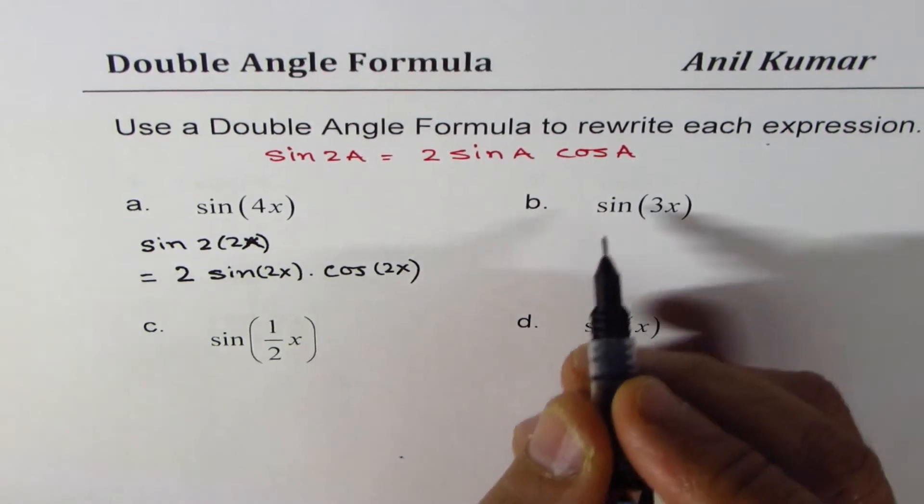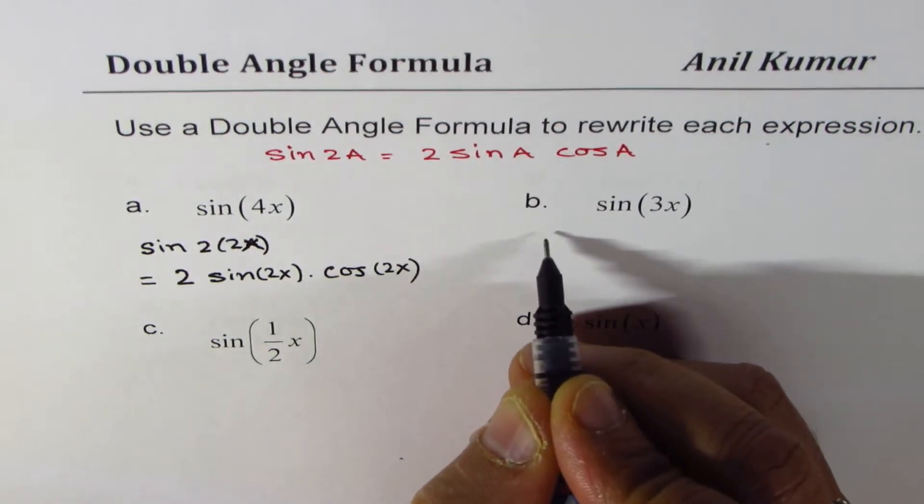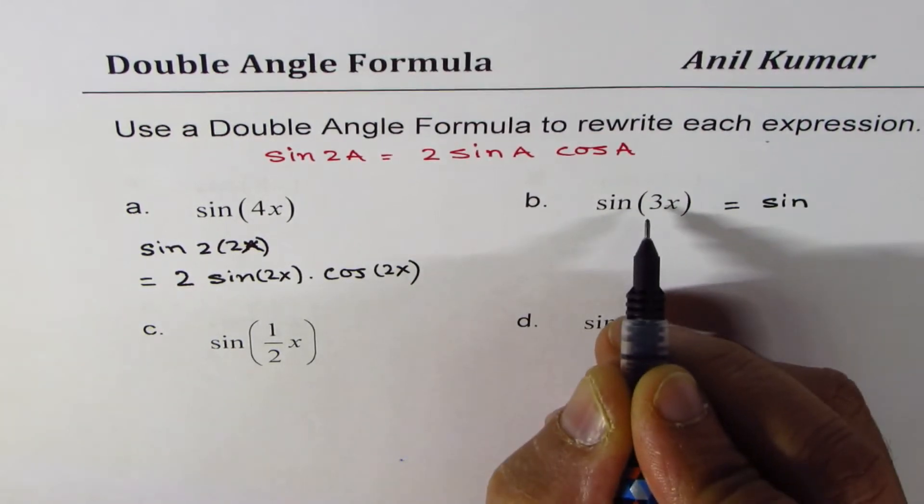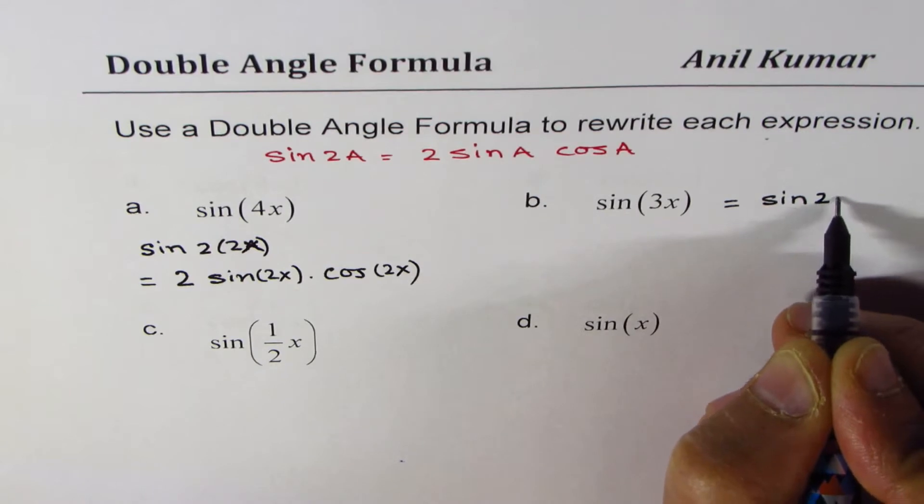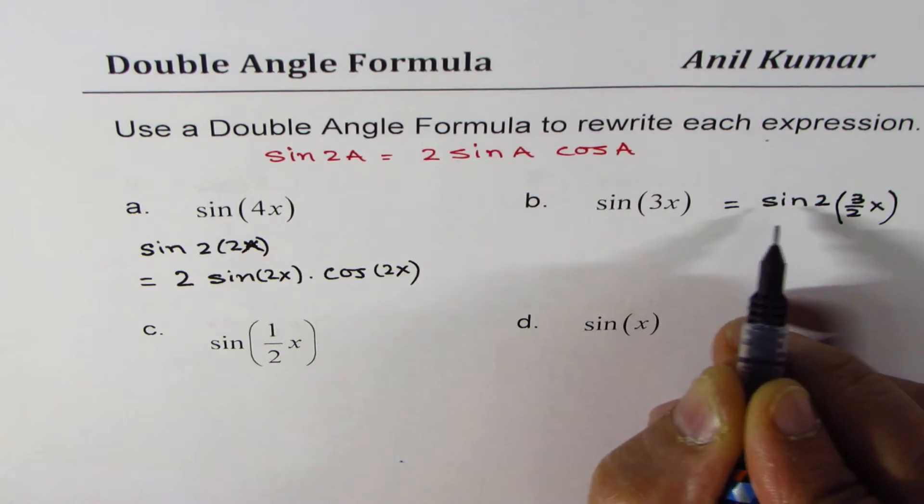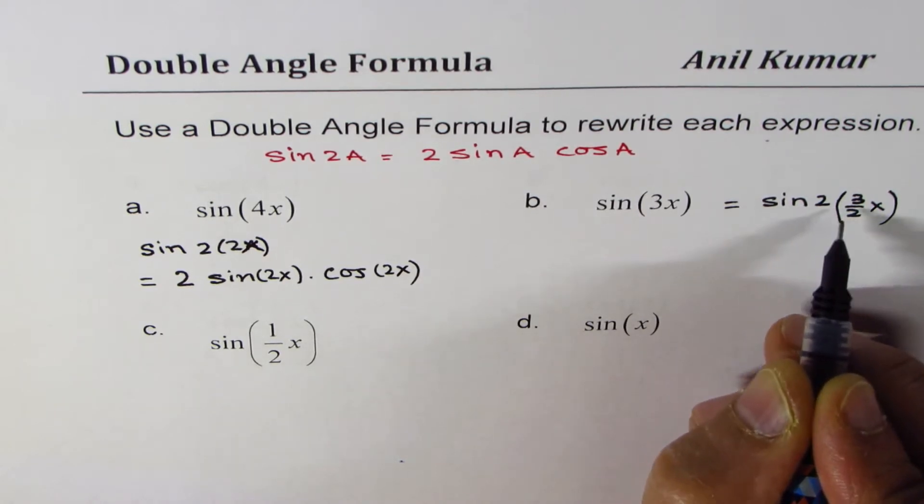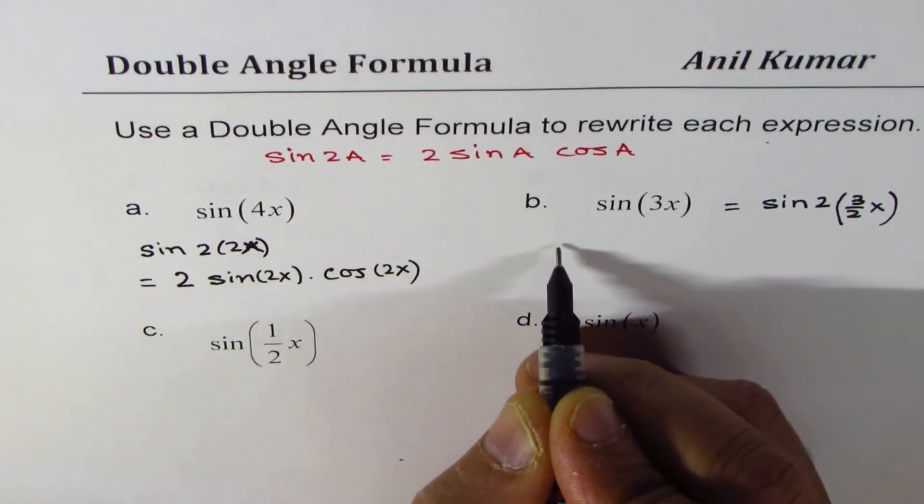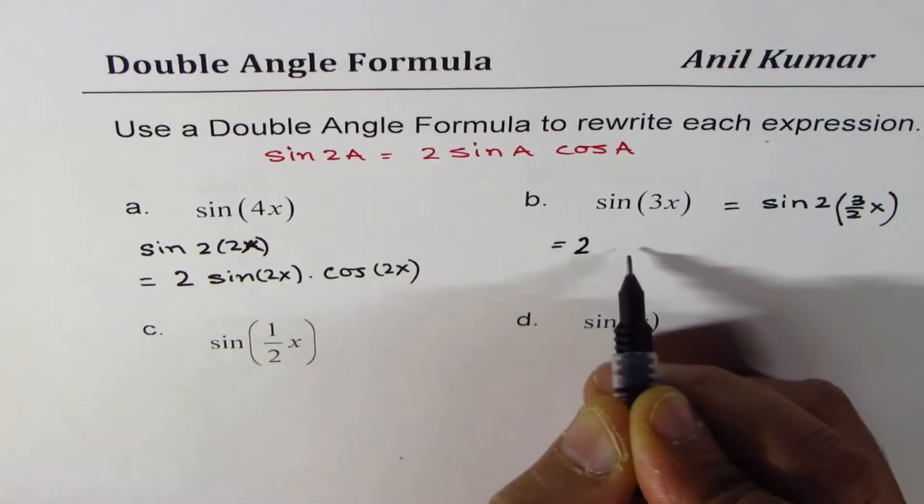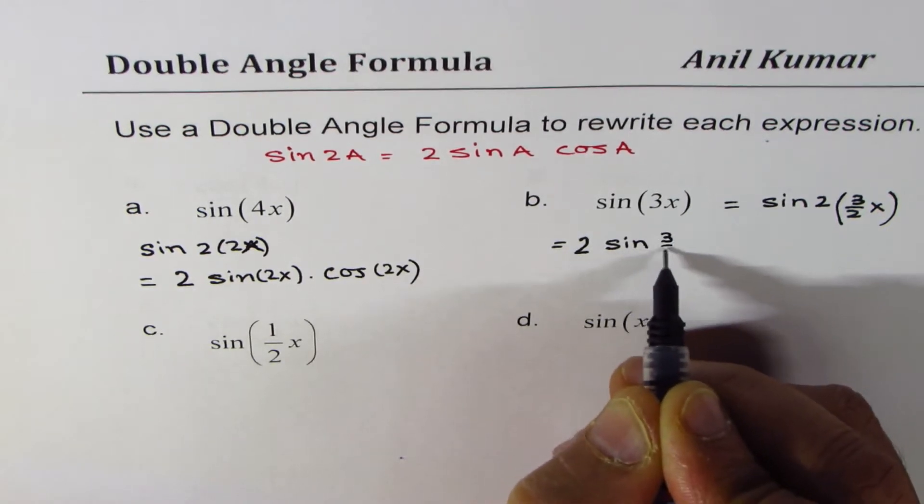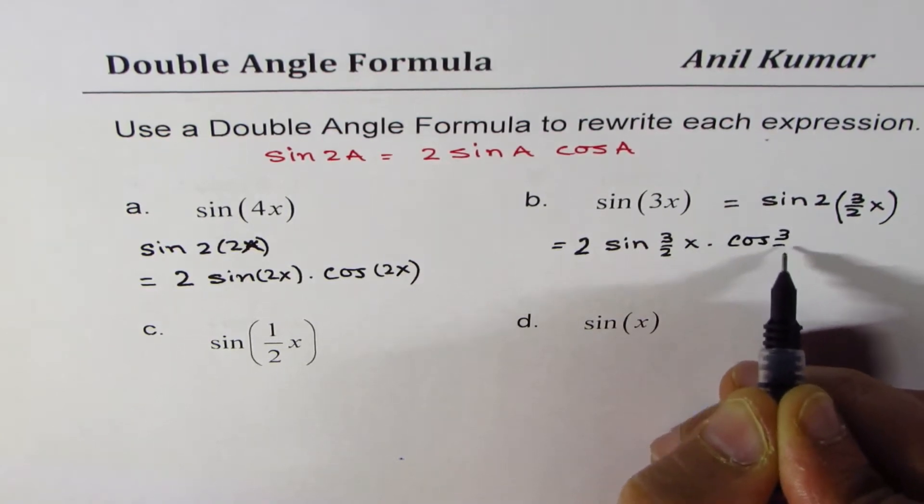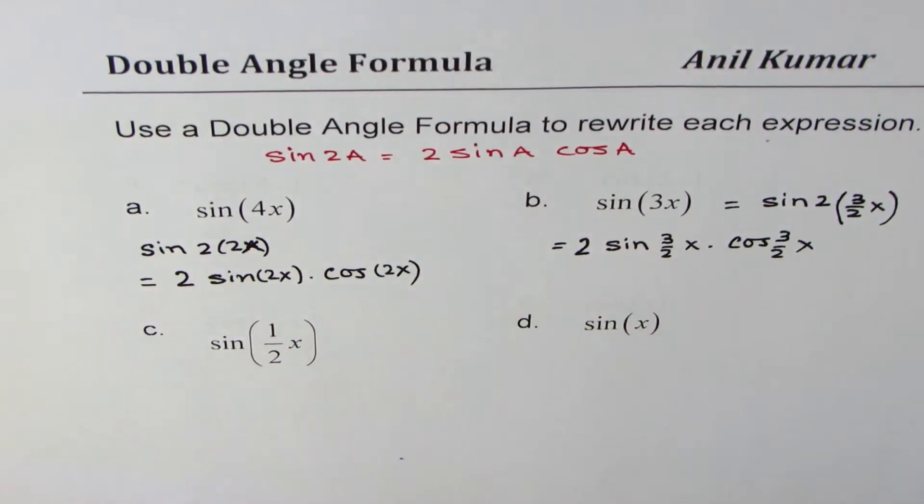Let's do it with sine of 3x now. Sine of 3x could be written as sine of 2 times something. So 2 times what? It is 2 times 3 over 2x. Sine of 2 times 3 over 2x is sine of 3x. And now we can apply this double angle formula and write this as 2 times sine 3 over 2x cos 3 over 2x.